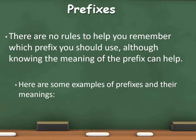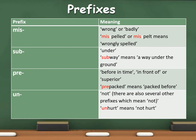There are no rules to help you remember which prefix you should use, although knowing the meaning of the prefix can help. Here are some examples of prefixes and their meanings. Prefix 'mis' means wrong or badly — 'misspelled' means wrongly spelled. 'Sub' means under — 'subway' means under the ground. 'Pre' means before in time, in front of, or superior — 'pre-packed' means packed before. 'Un' means not — 'unheard' means not heard. There are also several other prefixes which mean not.